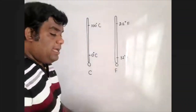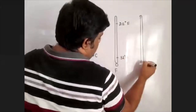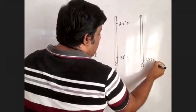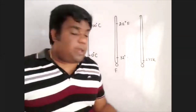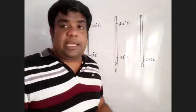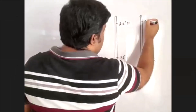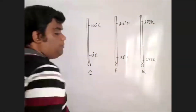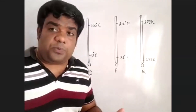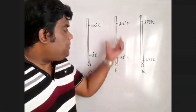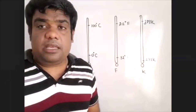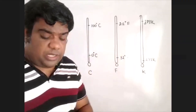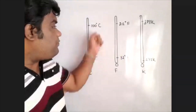Now, Kelvin thermometers. The ice melt temperature is 273 Kelvin. In Kelvin, there is no degree symbol — just 273 Kelvin. The upper fixed point is 373 Kelvin. So we have 3 thermometers, each with a lower fixed point and an upper fixed point.